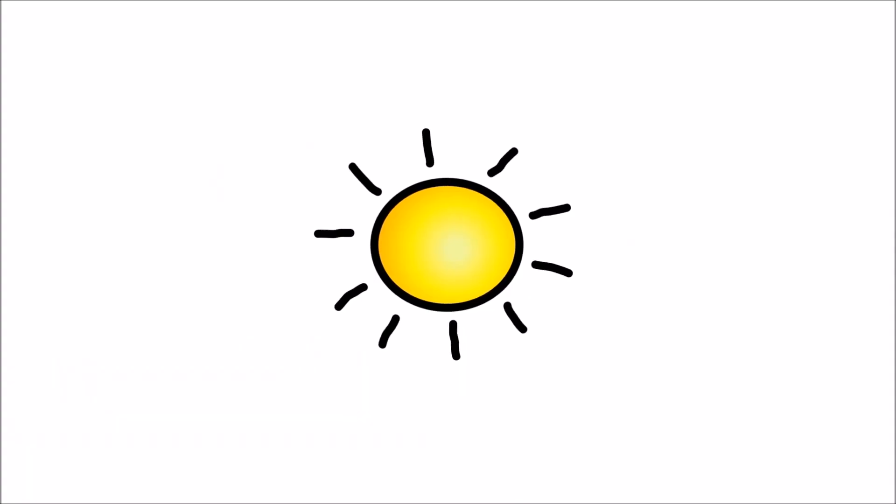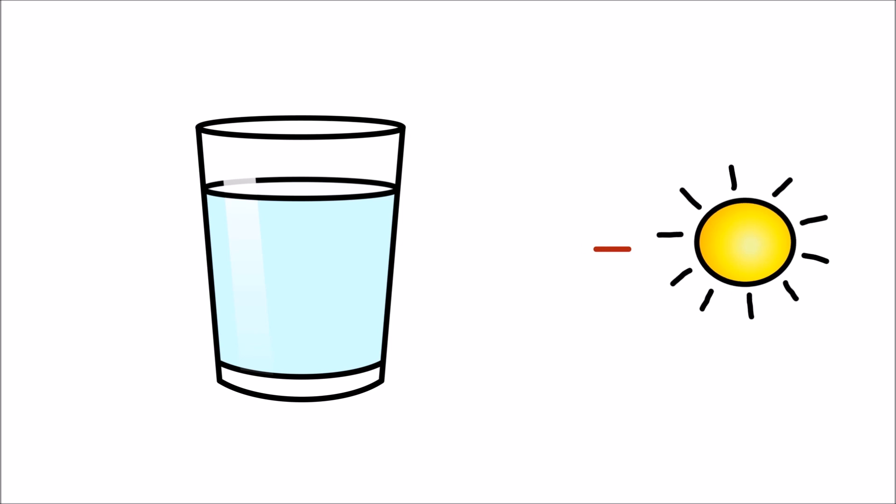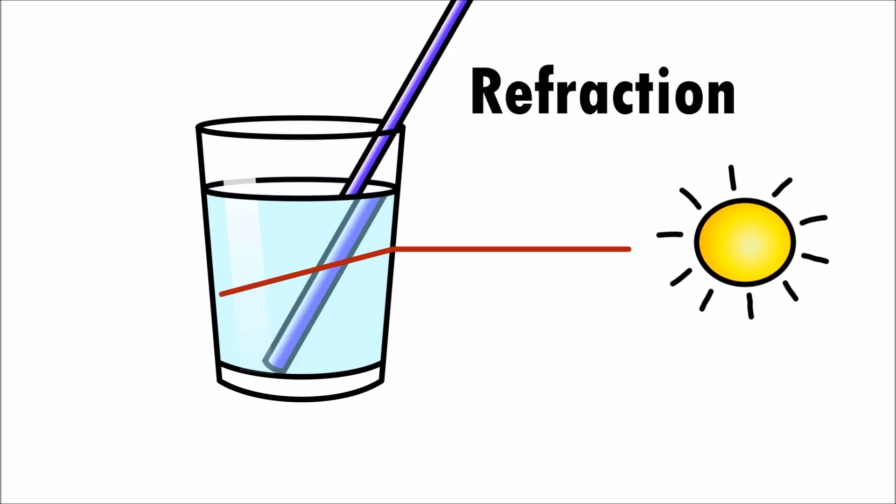The exact same thing happens to light! When light moves from one substance to another, it changes speed. Because the speed changes, it also causes the direction to change slightly. This concept is called refraction and it is why the straw looks bent.